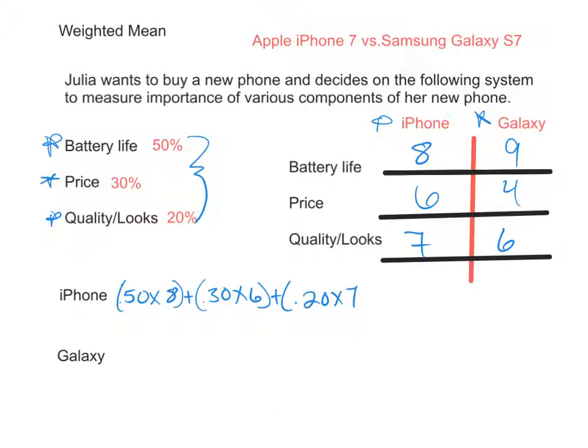Plus 0.2 for the quality and looks, which she gave a 7. In other words, 4 plus 1.8 plus 1.4. She's going to give the iPhone an overall rating of 7.2, considering all these different components that are weighted differently.